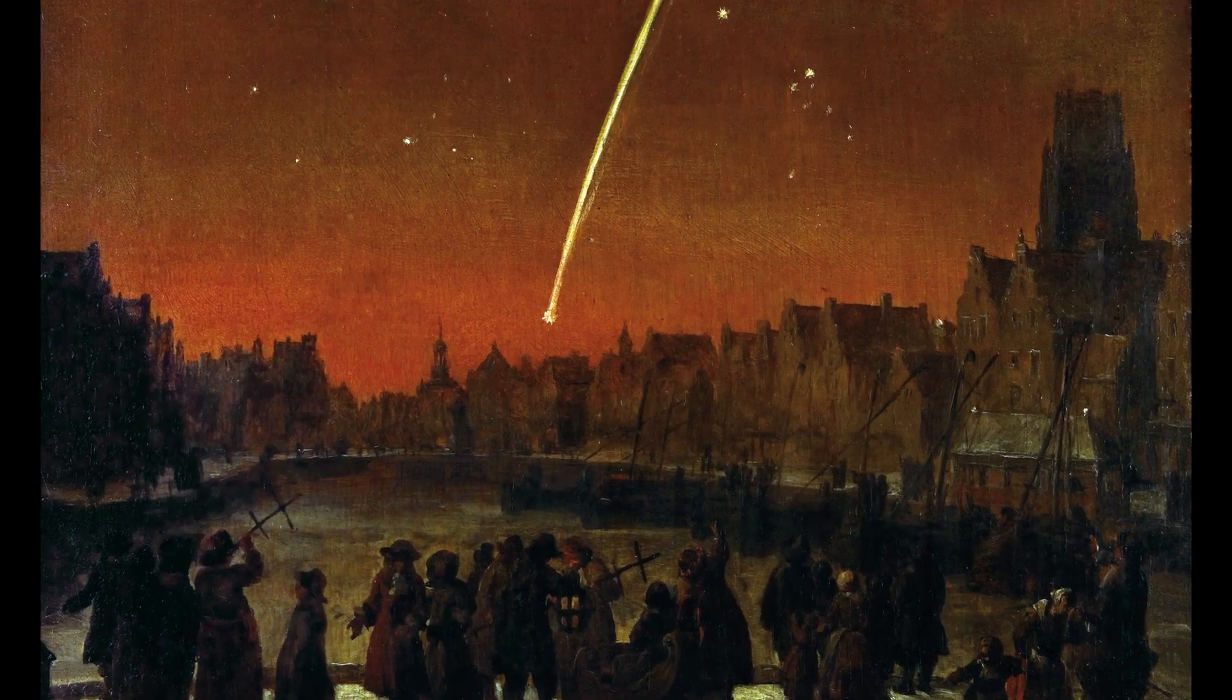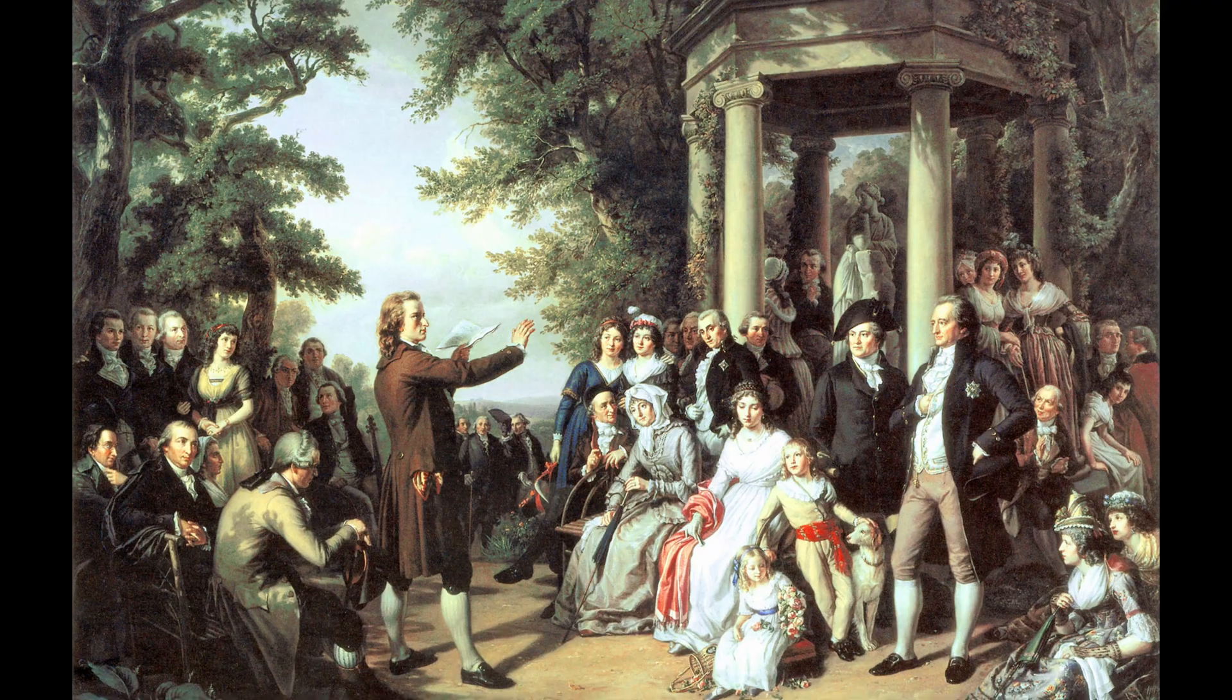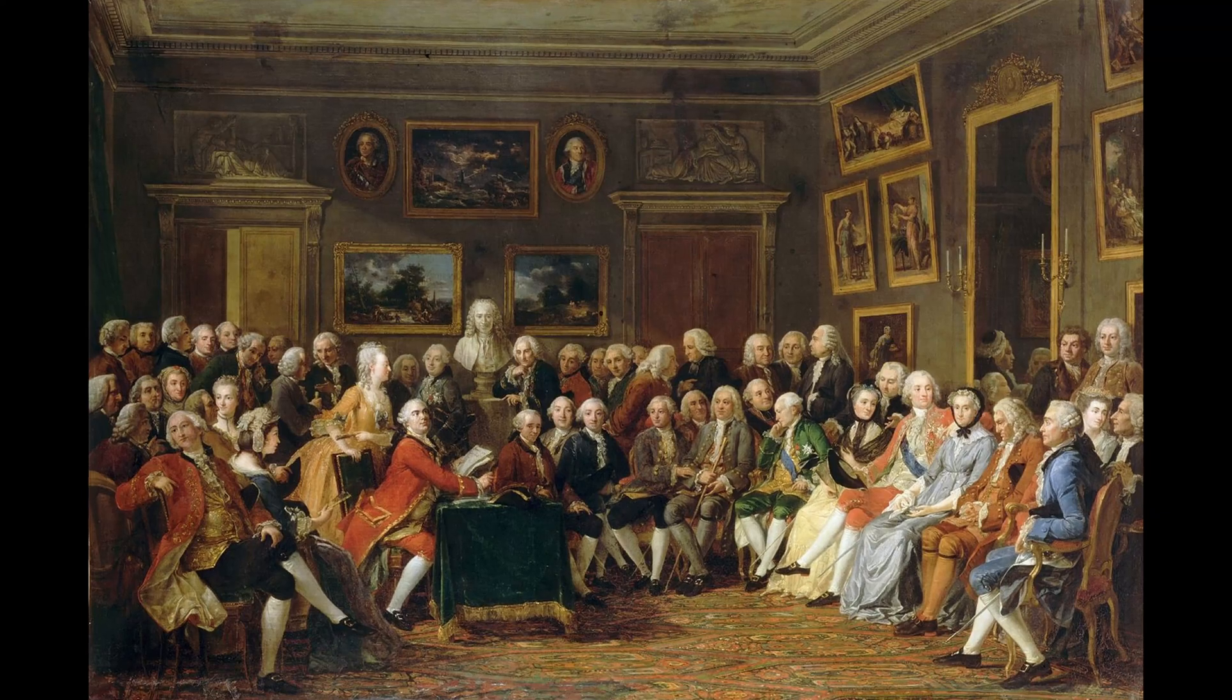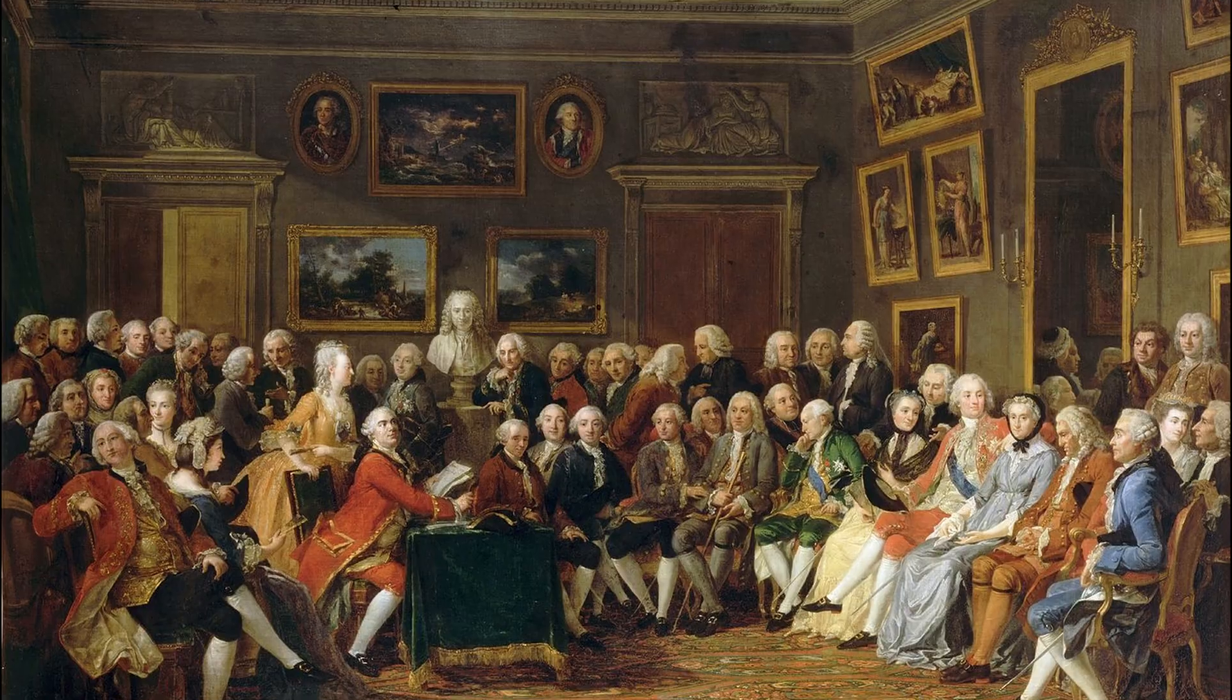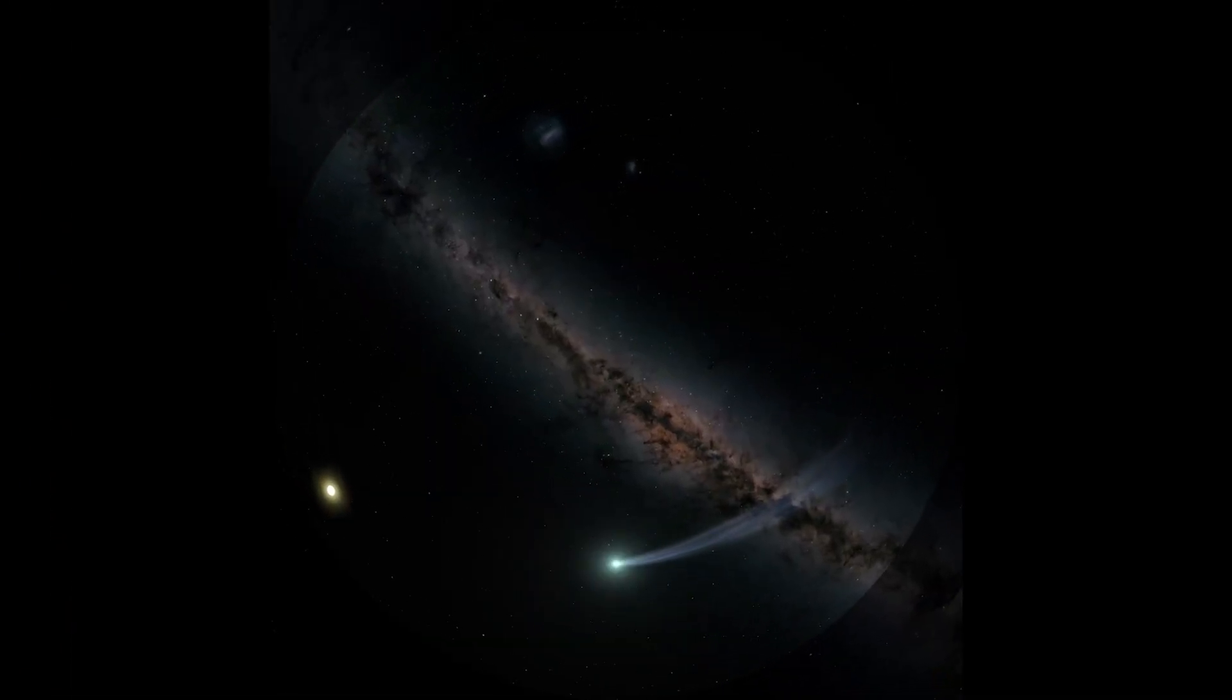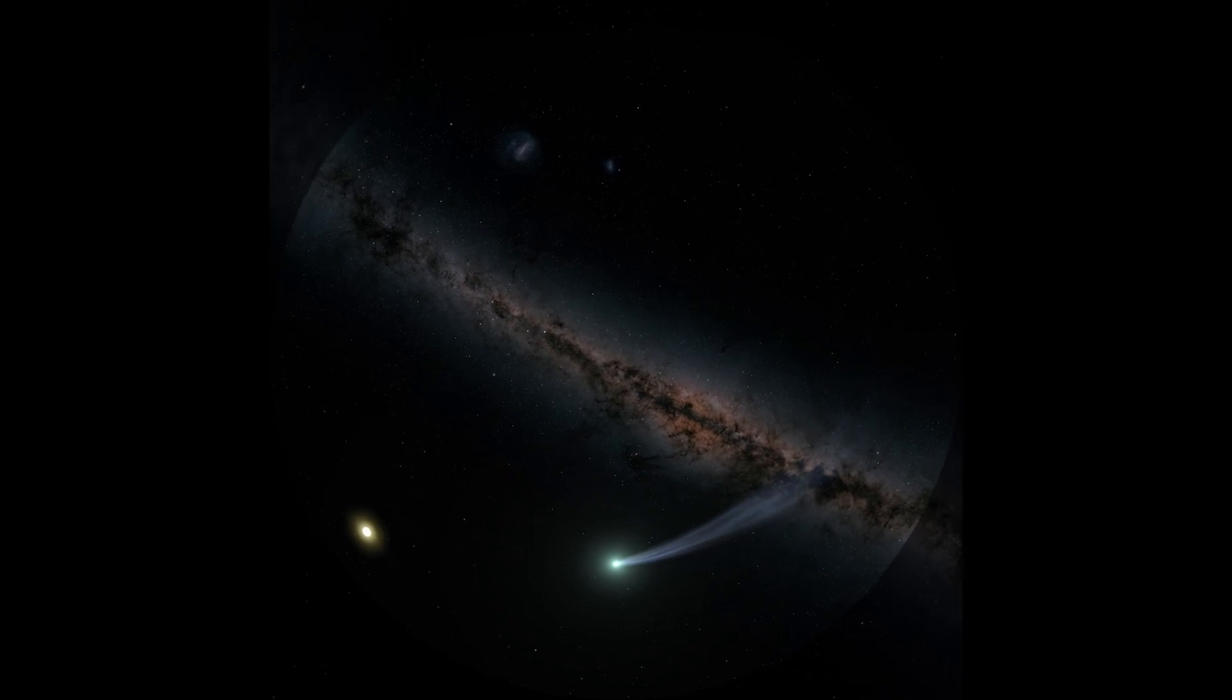Centuries later, the Great Comet of 1680 was observed just as the Enlightenment was beginning to take hold, a period of immense intellectual and social upheaval. Was this a coincidence, or was the appearance of comets always linked to monumental shifts in human history?